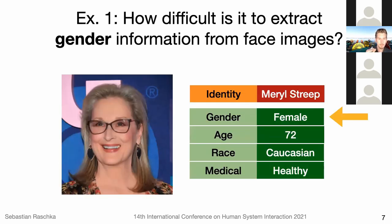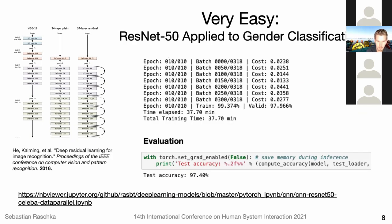It may not look like an easy problem, but extracting the gender of a person is actually pretty simple with nowadays deep learning technologies — this is something everyone could do and doesn't really require a lot of expertise. As an example, I used an off-the-shelf deep learning architecture — ResNet-15 — you can find it on many websites and repositories.